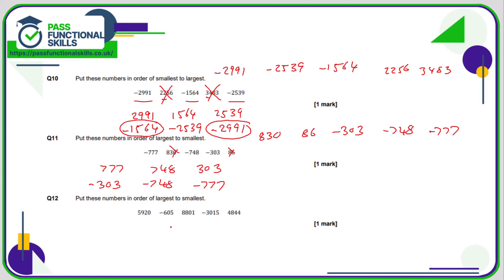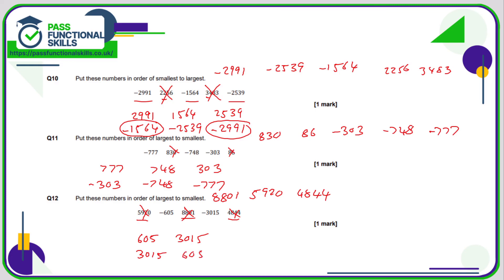Question 12: largest to smallest. The positive four-digit numbers begin with 5, 8, and 4 — 8 is the biggest, so the order is 8801, 5920, 4844. For the negatives — minus 605 and minus 3015 — treat them as positives: 605 and 3015. Largest to smallest as positives would be 3015, 605. As negatives, the order reverses: minus 605 is larger, then minus 3015. Minus 3015 is the smallest number of them all because it is the most negative.